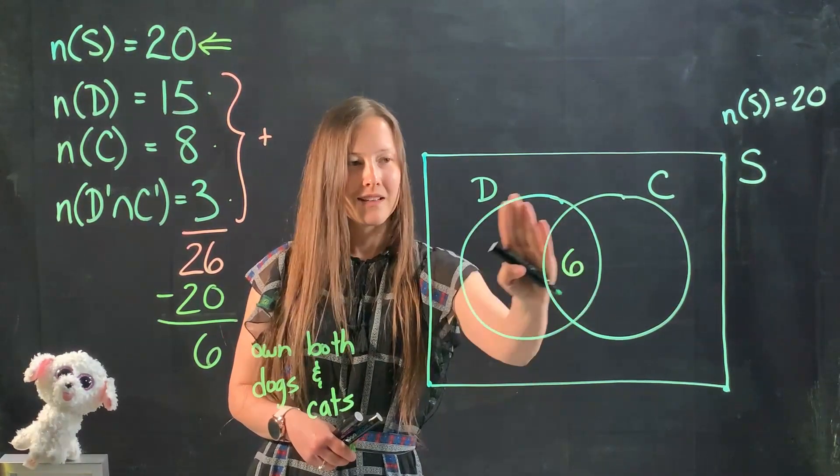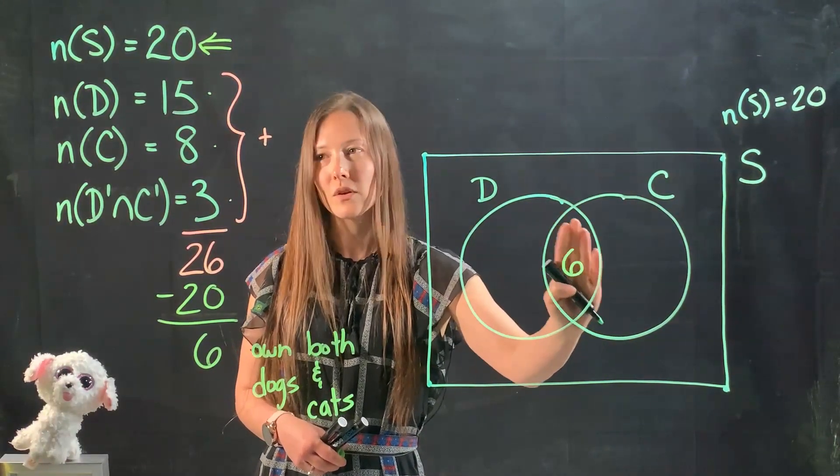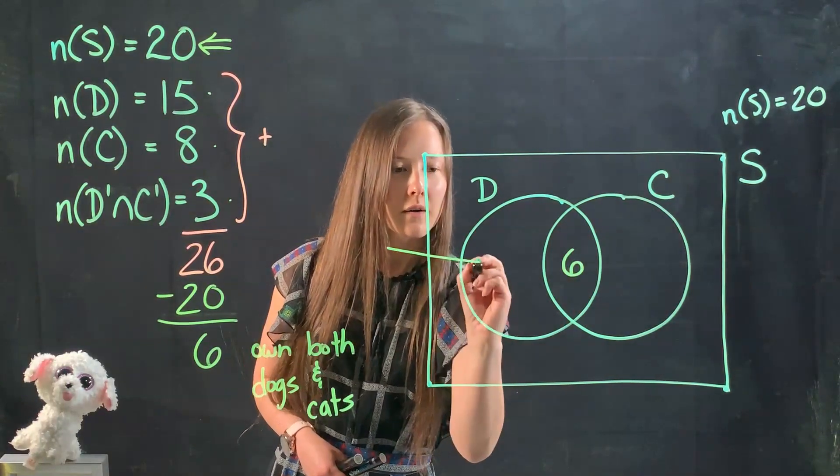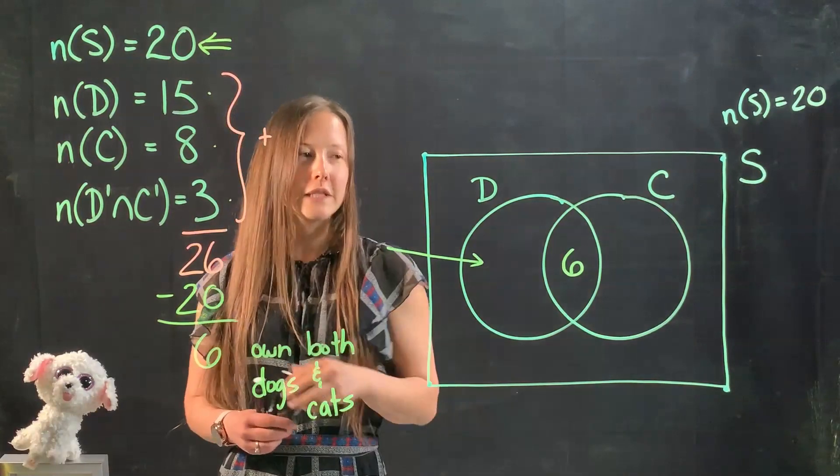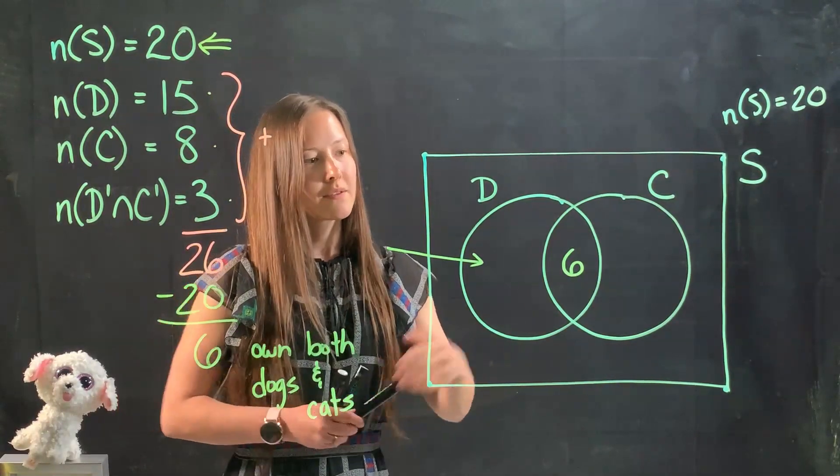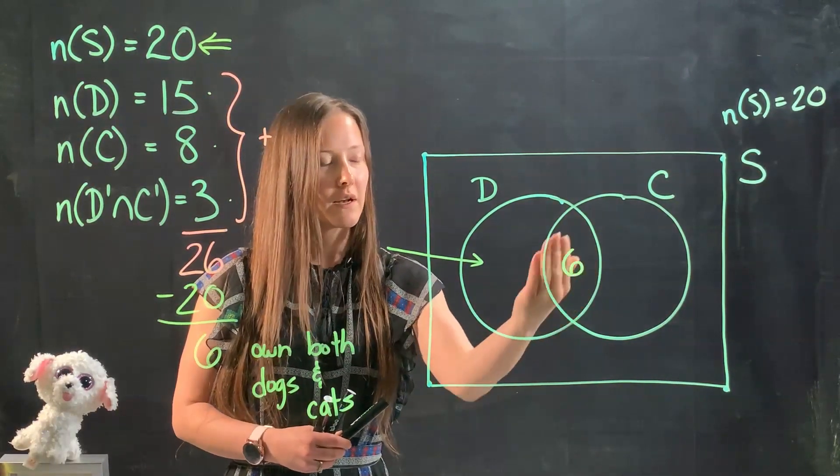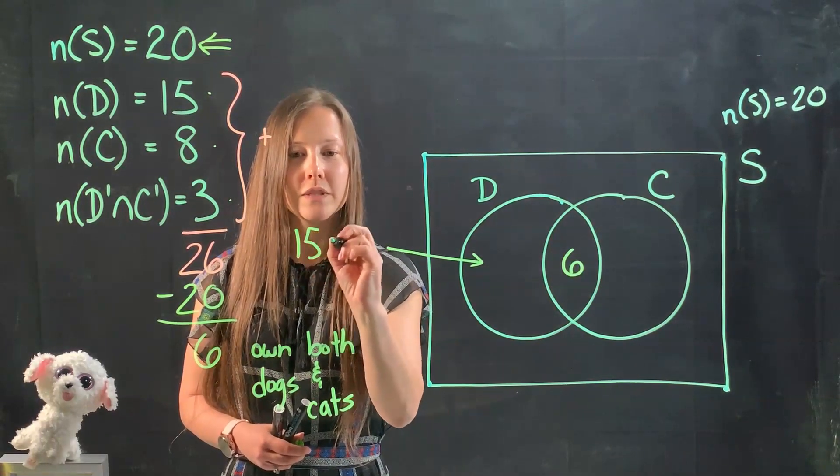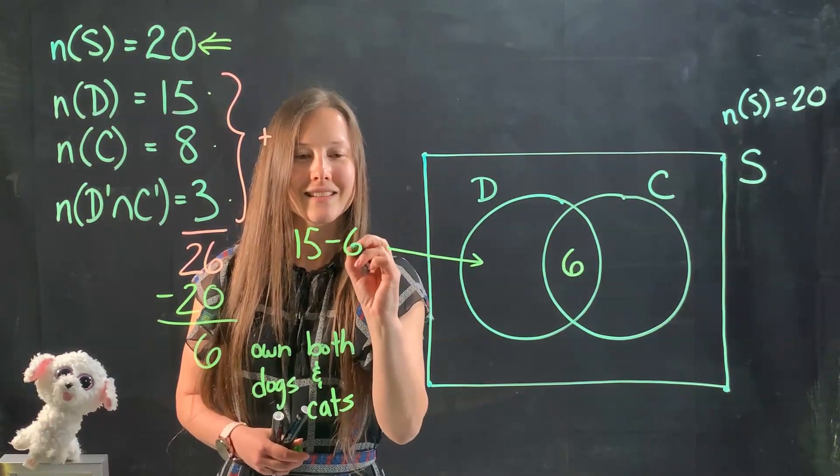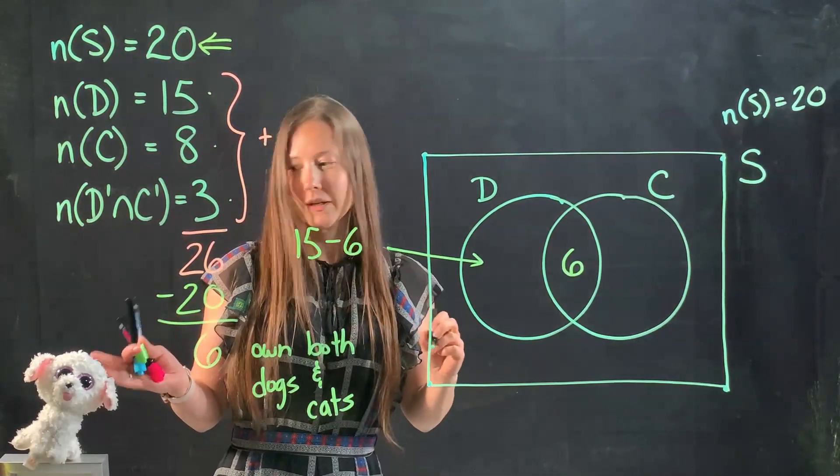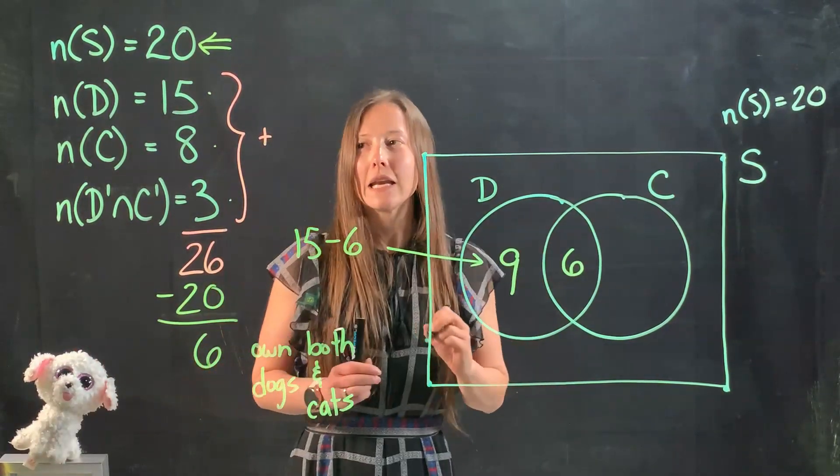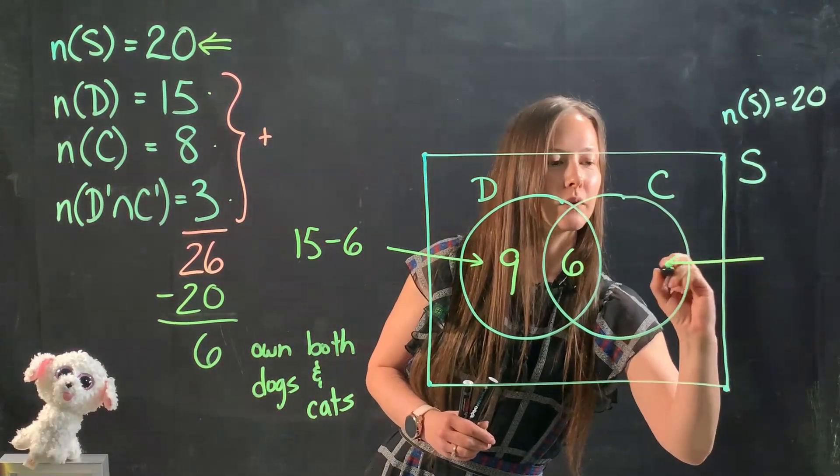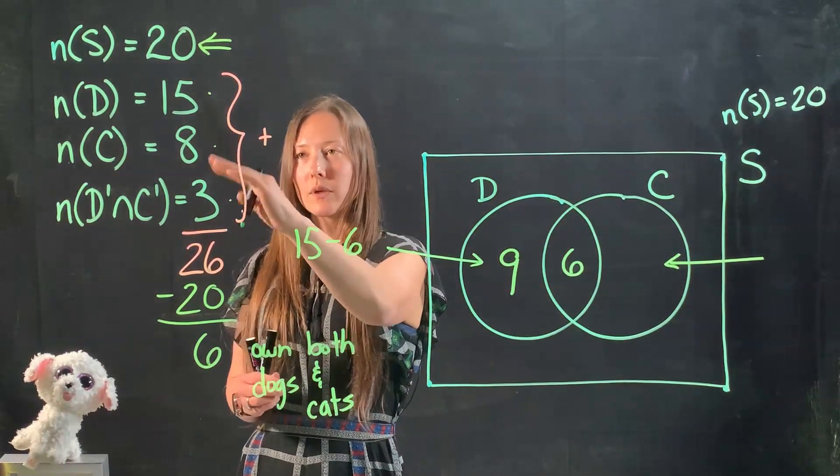It's a region of overlap between our two circles. Now here a common mistake would be for students to just go ahead and put the 15 there, but remember 6 of those are already accounted for in the middle. So what actually belongs there is 15 minus 6. What does that work out? 9, yes. Good, there we go, 9.